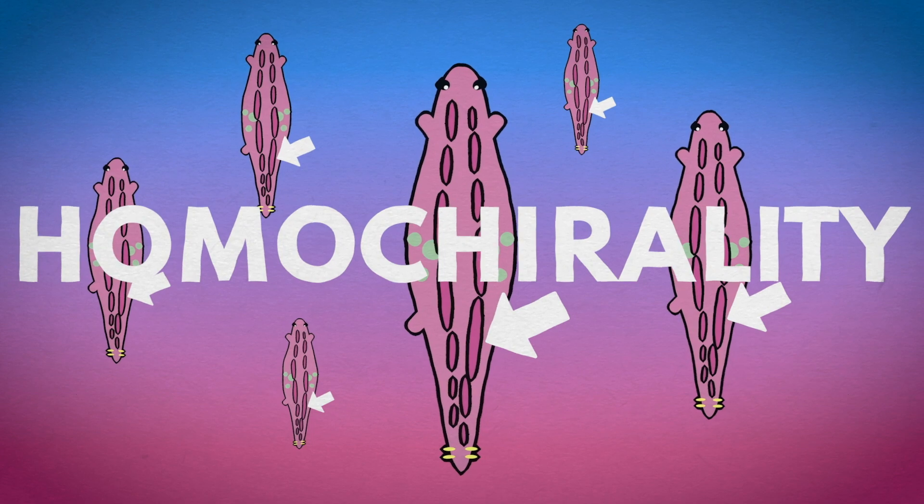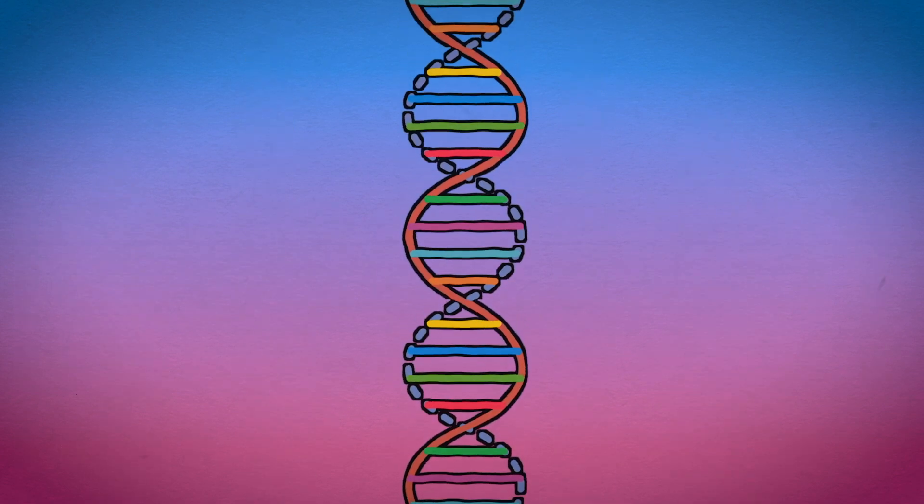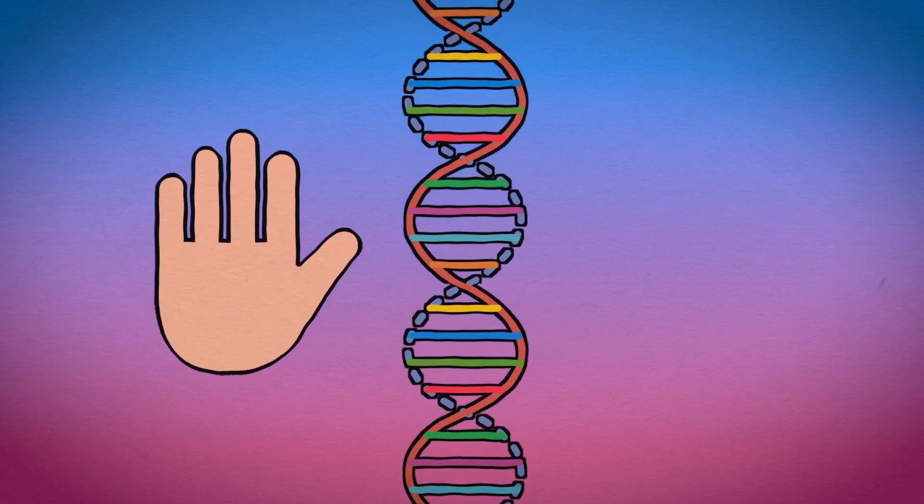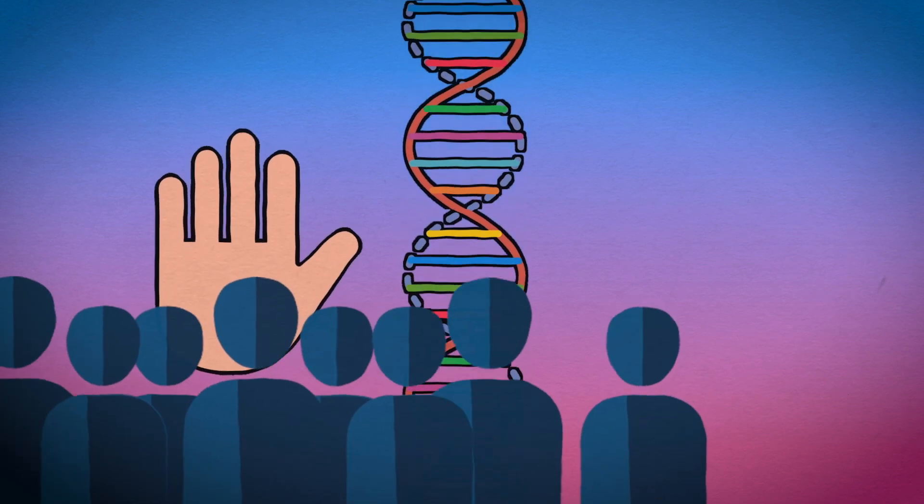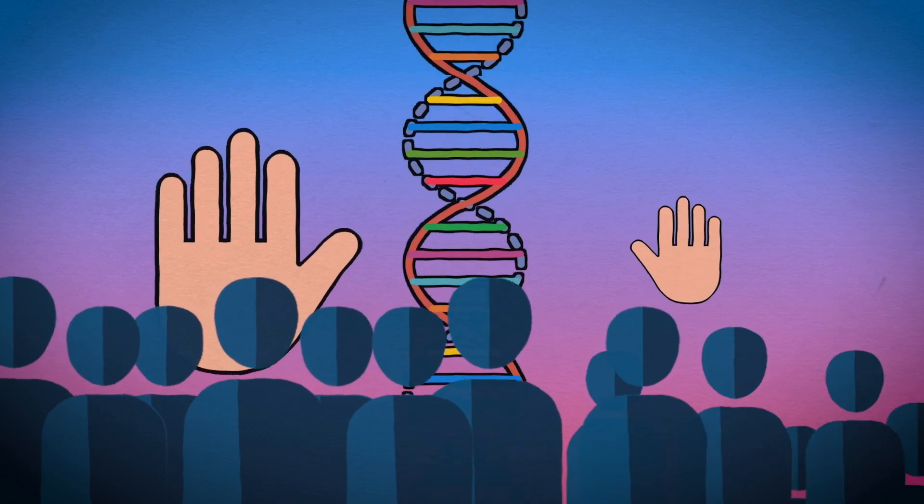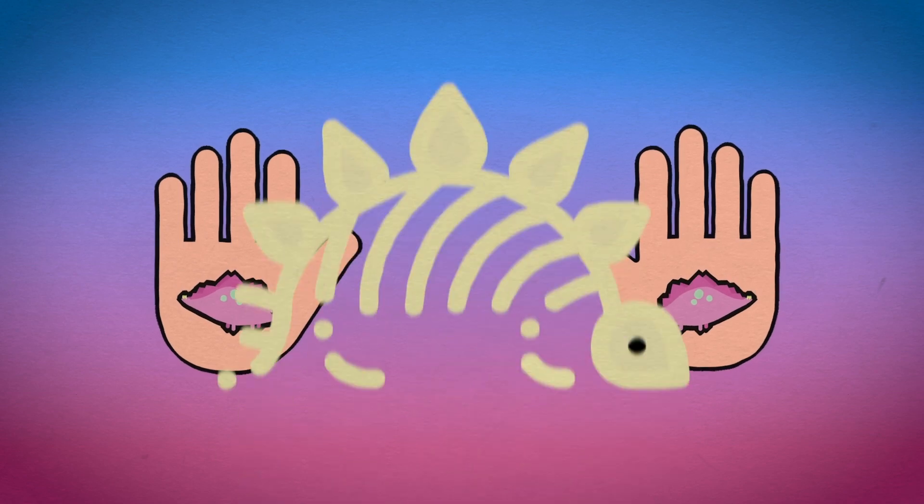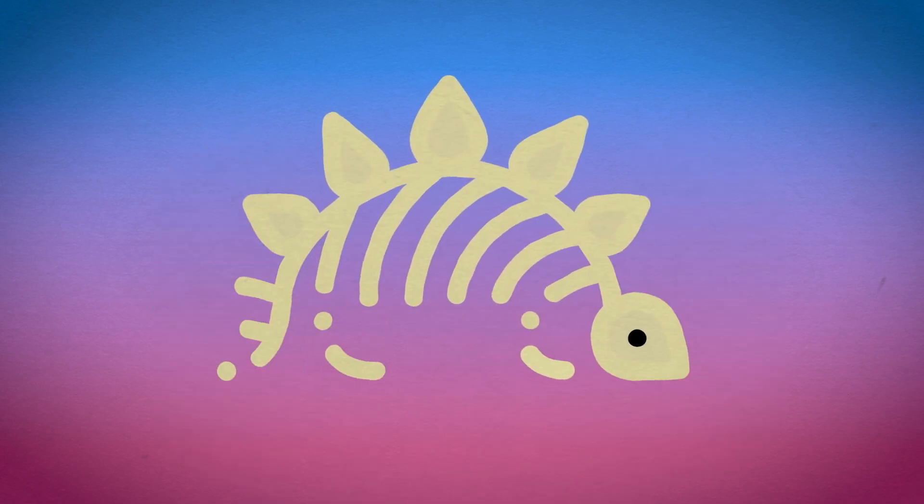This is homochirality. We can see it in the architecture of the sugar molecules in our DNA, which are exclusively right-handed. Or were stegosaurs more like humanity? Mostly right-handed, but with a minority population of southpaws. Or were there an equal number of right-handed and left-handed stegosaurs, but we haven't found the complementary fossil evidence yet.